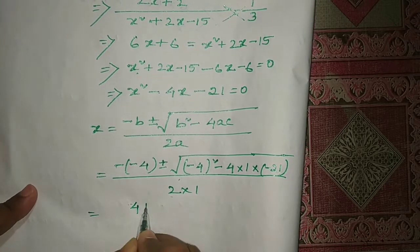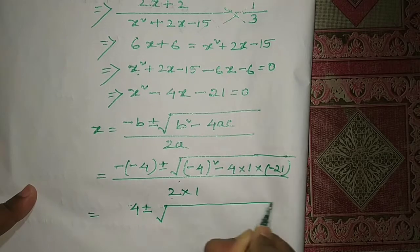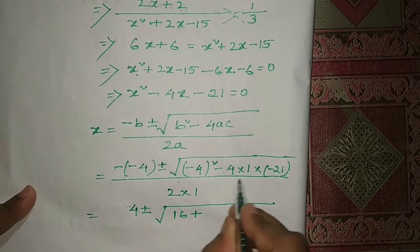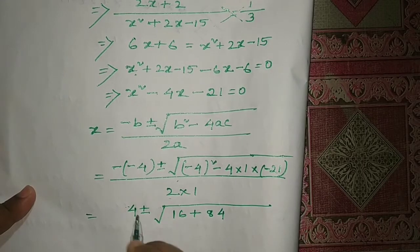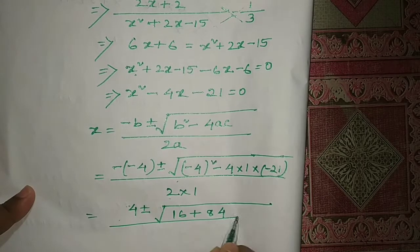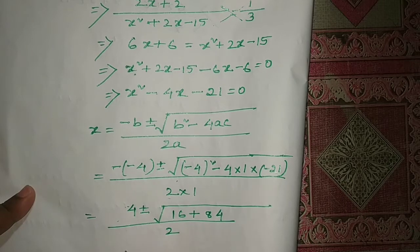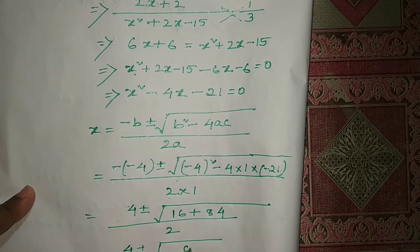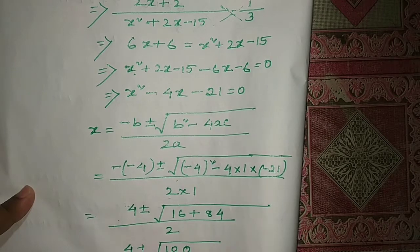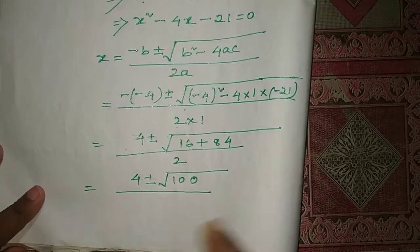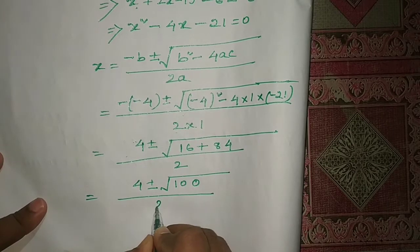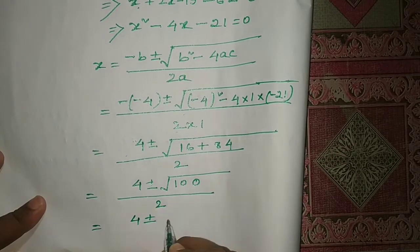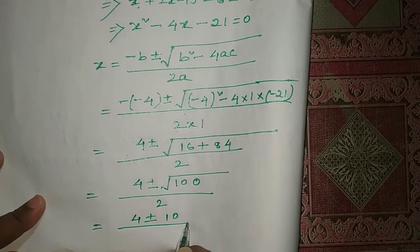That is equal to 4 plus or minus. 16 plus — minus minus — into 84, divided by 2. That gives 4 plus or minus the square root of 100, divided by 2. Sorry — 100 divided by 2. So 4 plus or minus 10, divided by 2.